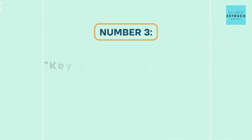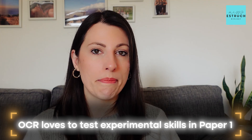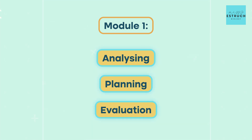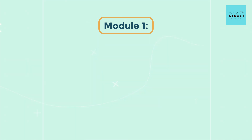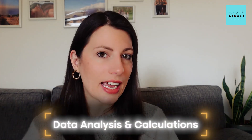Next, let's think about key practicals and data analysis. OCR loves to test experimental skills in paper one. In particular, what comes up a lot are: analyzing, planning and evaluation from module one, and graph interpretations and calculations. Make sure you are confident on describing why you'd use certain equipment, your control variables, control experiment, independent variables, and all things linked to planning as well as data analysis and calculations.